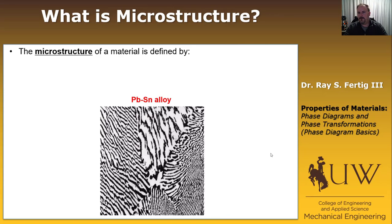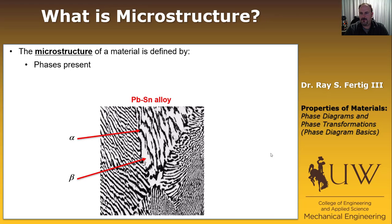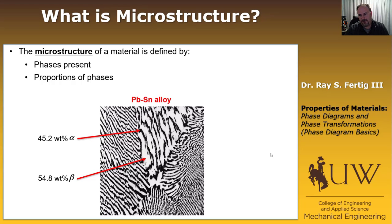The next term to define is microstructure, which is defined by three features of the material. The first is the phases that are present — in the lead-tin alloy example, those are the alpha phase and the beta phase. Then we want to know the proportion of the phases, meaning what percentage of the microstructure is alpha and what percentage is beta. In this particular microstructure, it's 45.2 weight percent alpha and 54.8 weight percent beta.